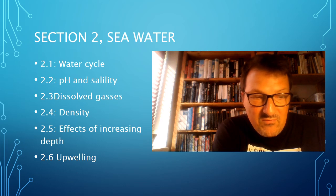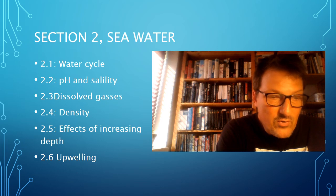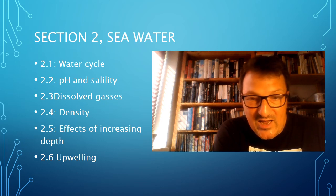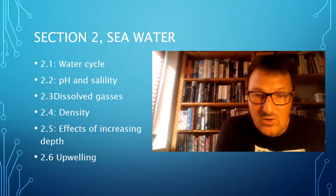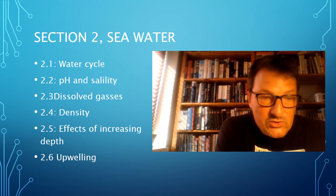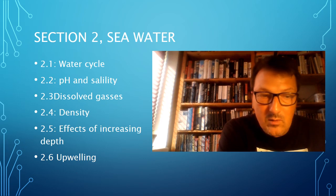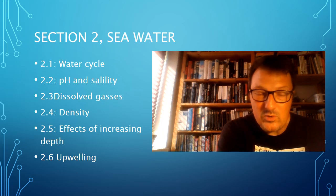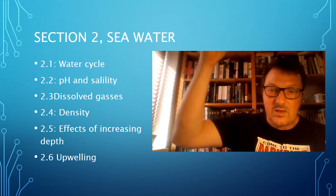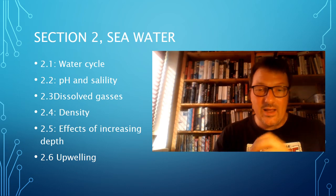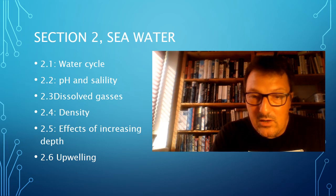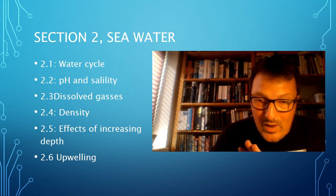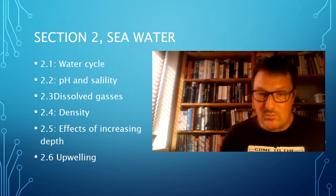2.5 we'll look at the effect of increasing depth — how light penetration, pressure, and temperature will change as we go from the top layers of the ocean further down. We'll also look at how the concentration of dissolved gases changes as we go down. And 2.6 will look at upwelling — describing how winds can cause upwelling, which leads to cold water rising from the bottom into the photic zone, leading to a bloom of algae. There will also be a case study looking at El Niño.